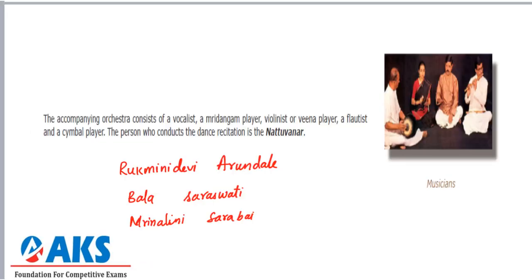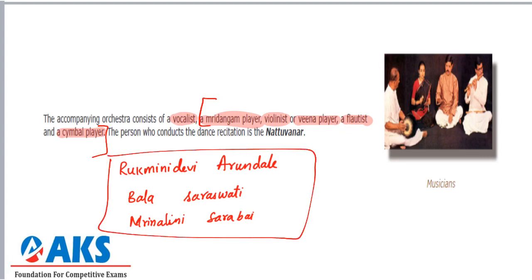The orchestra accompanying Bharatanatyam consists of a vocalist, Mridangam player, violinist, veena player, flutist, and cymbal player. Important personalities who have gained fame in Bharatanatyam include Rukmini Devi Arundale, Balasaraswati, Mrinalini Sarabhai, Yamini Krishnamurti, and Sonal Mansingh. Another important aspect is that Bharatanatyam is somewhat similar to Mohiniyattam of Kerala.